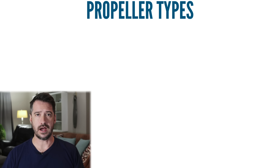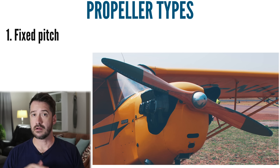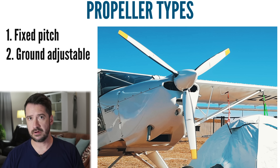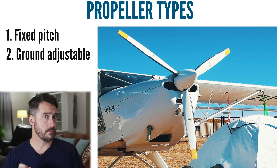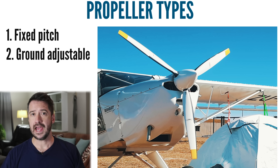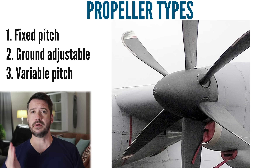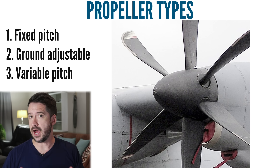There are three main types of airplane propellers: fixed pitch, ground adjustable — for which the pitch can be adjusted on the ground but remains fixed in flight — and variable pitch propellers, which can adjust pitch in flight.